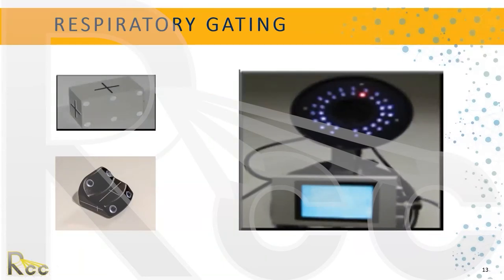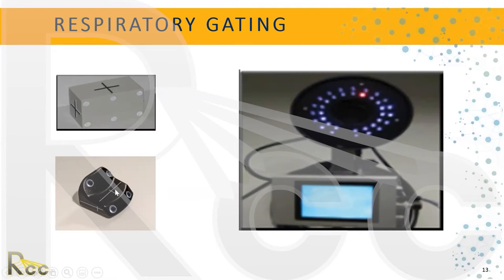What's involved with respiratory gating? We need tools and equipment. One key piece is an infrared camera mounted on the wall — it emits light. The other is a marker box placed on the patient. When the camera emits light, the reflector dots on the marker box reflect it back, and the camera captures what we call a respiratory signal to track and analyze the patient's motion. There are different vendors with different software for this.